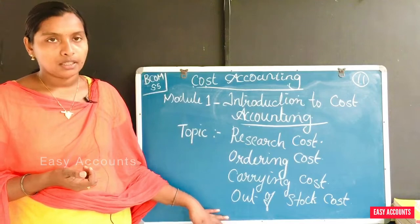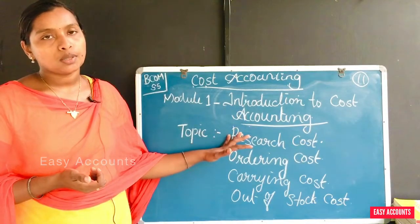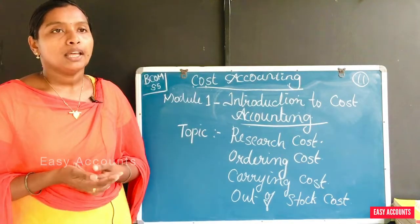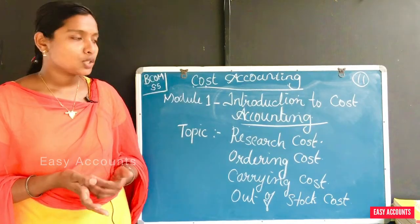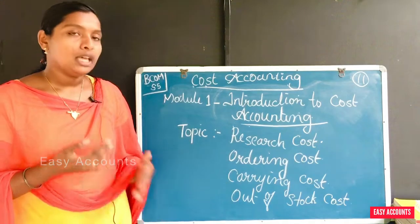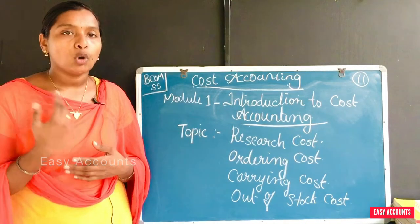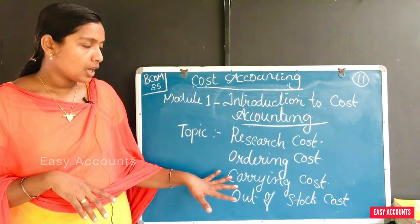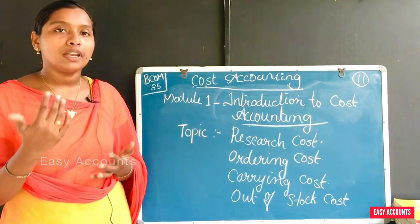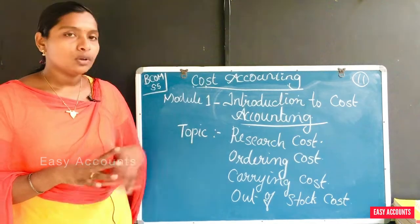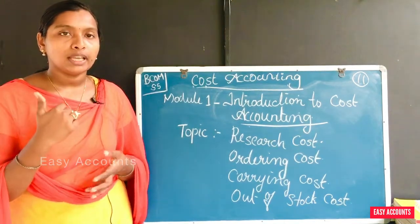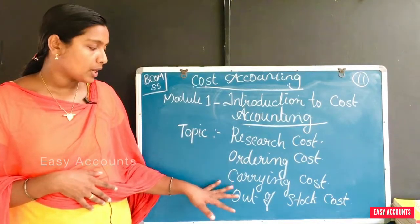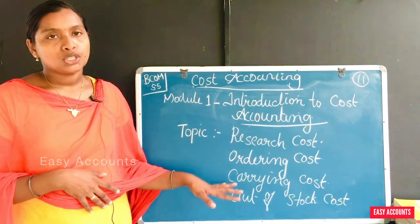So, research cost is about using a different product and innovation. Ordering cost is the cost of ordering raw materials. Carrying cost is the cost of maintaining the inventory in our business. Out-of-stock cost is related to the shortage and its consequences.